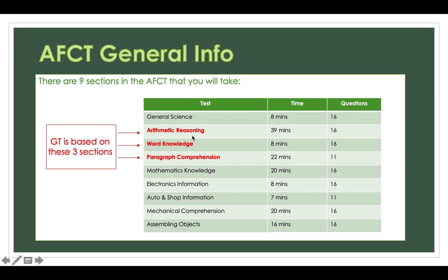Let's talk about the number of questions and the time you have. For arithmetic reasoning — basically everybody's favorite, the math word problems — you have 39 minutes and there are 16 questions. For the word knowledge section, there are eight minutes and 16 questions. And then the paragraph comprehension section is 22 minutes with 11 questions. Those are the three sections you need to worry about for your GT score.